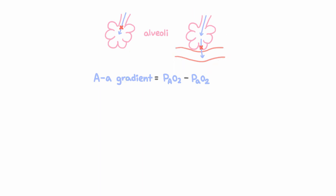So practically speaking, how do we calculate the AA gradient? How do we figure out what these are? Well, we know how to calculate alveolar oxygen using the equation we just discussed, and arterial oxygen we can just measure from an ABG.